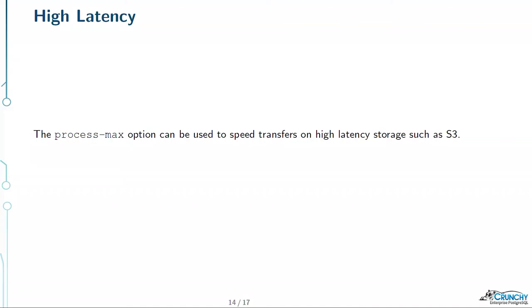Process max is not just good for getting more cores going. If you have high latency storage, you can use it to overcome some of that latency — you're still going to be waiting, but you'll have eight processes doing it instead of four or two. This is the exception to keeping archive push and archive get kind of low: if you have very high latency storage and aren't getting the throughput you want, this is one way to solve that. For S3, pipelining should mostly deal with this situation, but you still have latency for new requests.